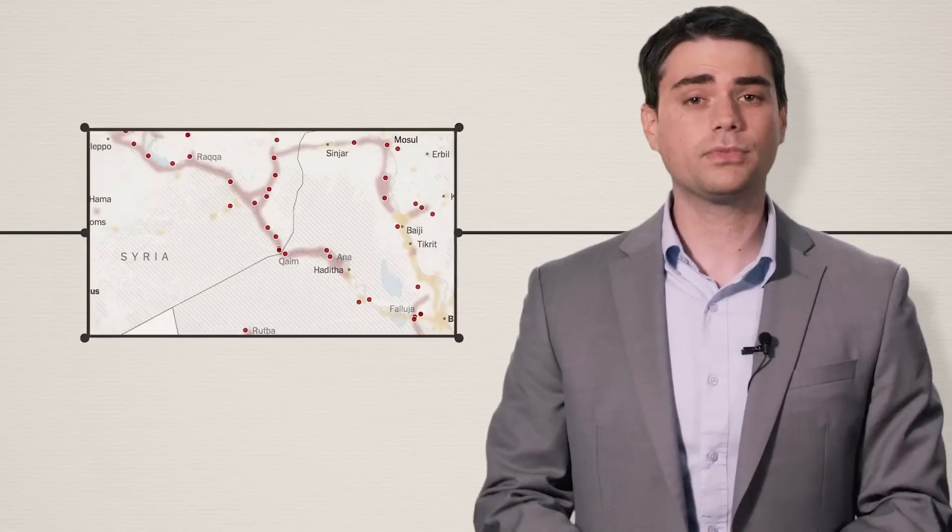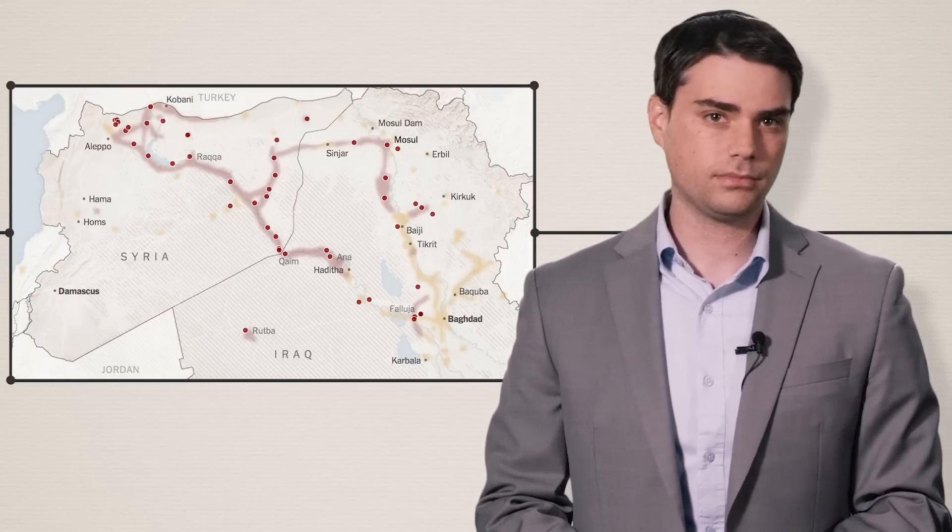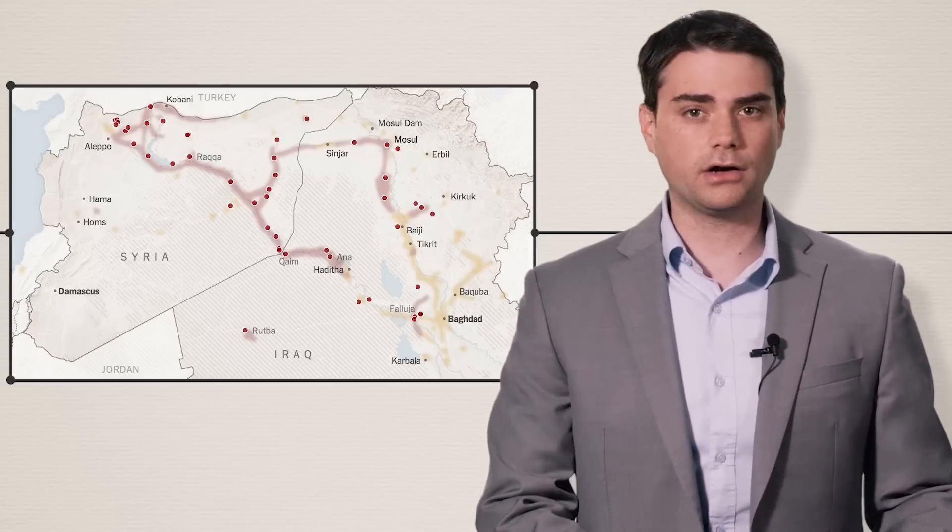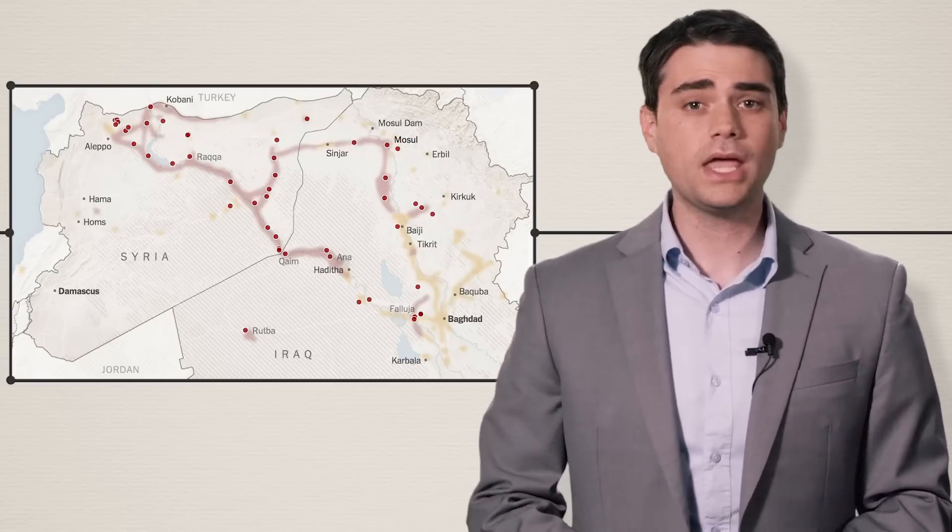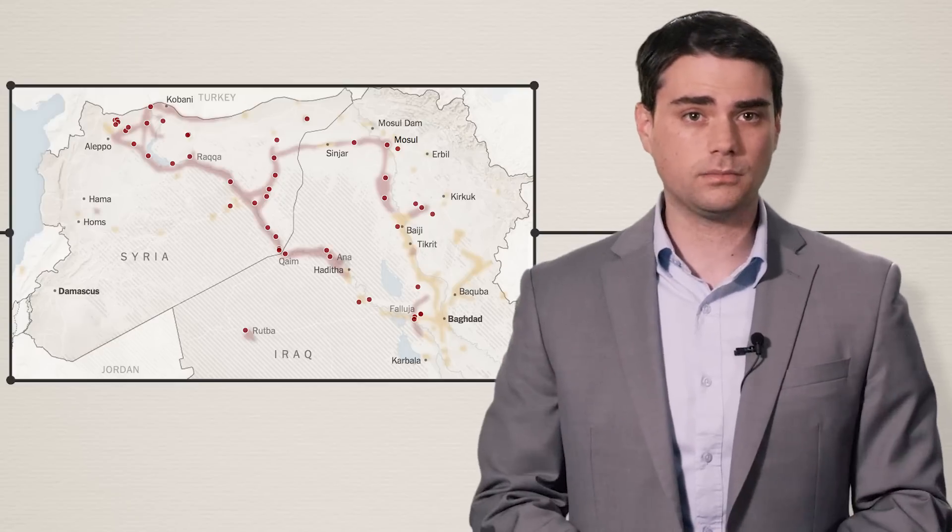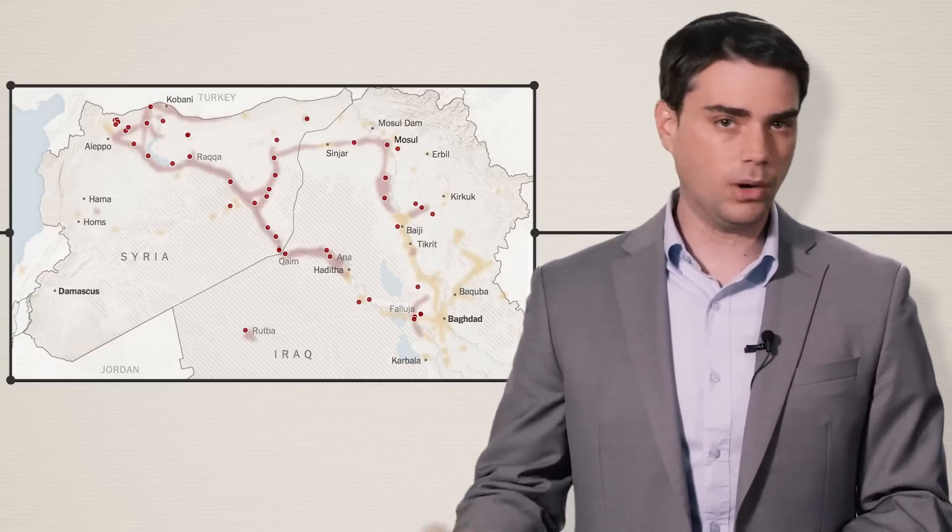Here's a map from the New York Times of what ISIS controls today in Iraq. The red dots, those are ISIS-controlled places. The pink shaded areas, those are ISIS-controlled as well. Everything in yellow, those are places under repeated assault from ISIS.